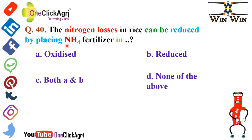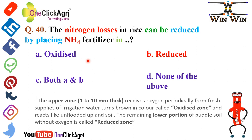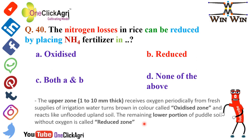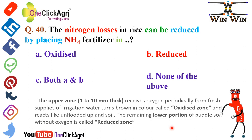Question number 40: Nitrogen losses in rice can be reduced by placing NH4 fertilizer in the reduced zone. The oxidized zone refers to the upper 1 to 10 mm thickness of soil that periodically receives oxygen. Below that, the lower portion of the puddled soil without oxygen is known as the reduced zone.